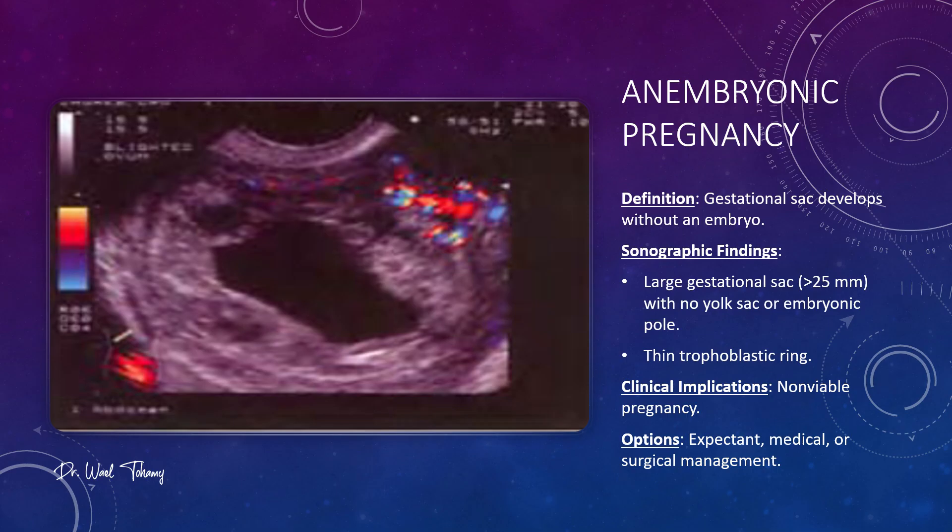Let's start with an anembryonic pregnancy. This is when the gestational sac develops but no embryo forms. On ultrasound, you will typically see a large sac more than 25 mm without a yolk sac or an embryonic pole, and a thin trophoblastic ring. Clinically, this means the pregnancy is non-viable. Management options include expectant care, medical treatment or surgical intervention, and the choice depends on the patient's clinical situation and preference.